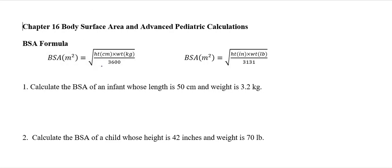We have one using metrics, where we have the height in centimeters and weight in kilograms. And then we have the household, which is the height in inches and the weight in pounds. Notice the only difference in the two formulas is that the household is divided by 3,131 and the metrics is divided by 3,600. So depending on what you're given, that's the one you're going to use.